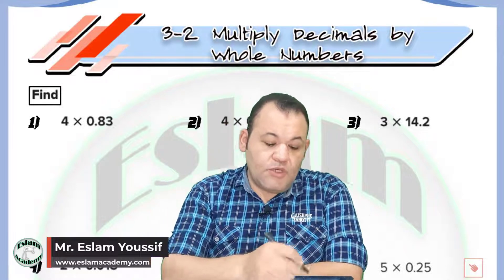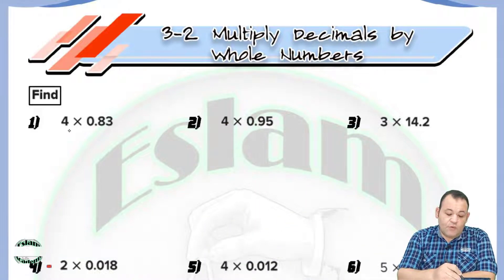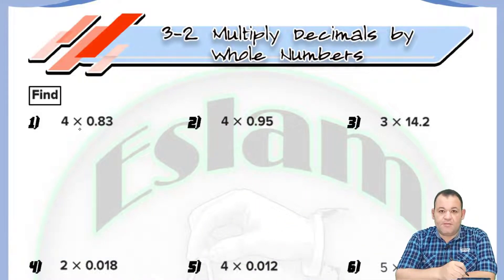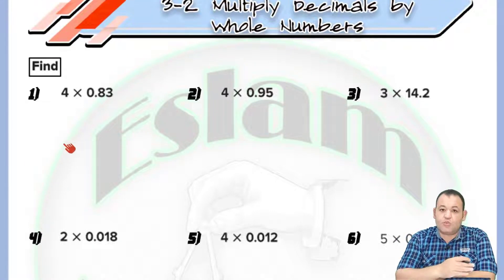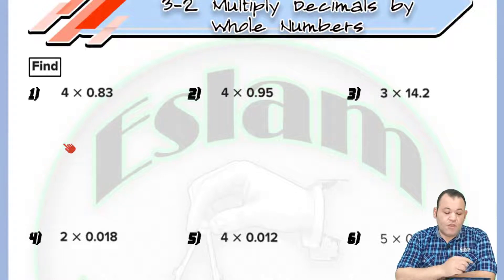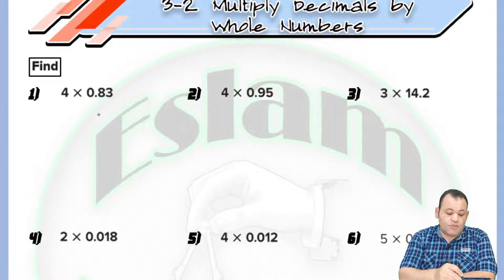For question number one, we have 4 multiplied by 0.83. How can we multiply them? First, we multiply as if there is no decimal number — so we treat it as 83 multiplied by 4.